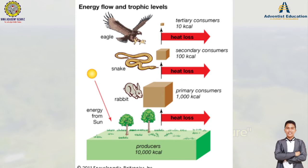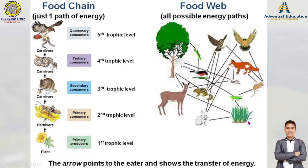That is how the trophic levels work. The foundation or baseline of the trophic level is the producer in the first level. The primary consumers are in the second level, the secondary consumers are in the third level, and the tertiary consumers are in the fourth level. The first trophic level contains the full amount of energy received from the sun. Now let's proceed to the food chain and food web.